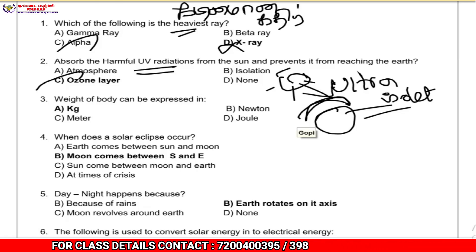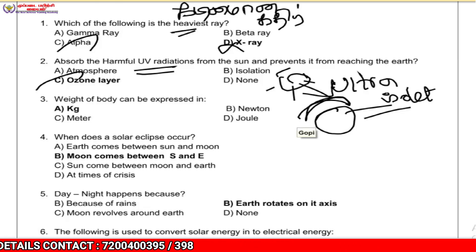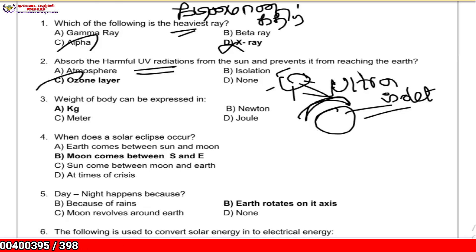The ozone layer is the thing that prevents ultraviolet rays from reaching us. The weight of a body can be expressed in kilograms.